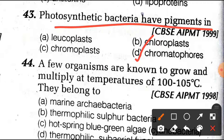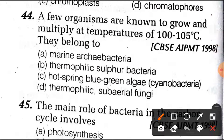Question number 44: a few organisms are known to grow and multiply at temperatures of 100–105 degrees Celsius. They belong to option A, which is the right answer: archibacteria, which live in marine habitats or extreme environments.